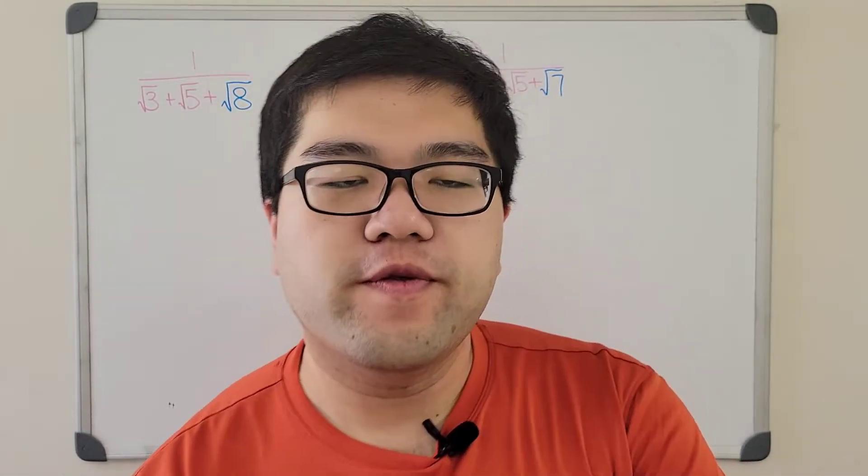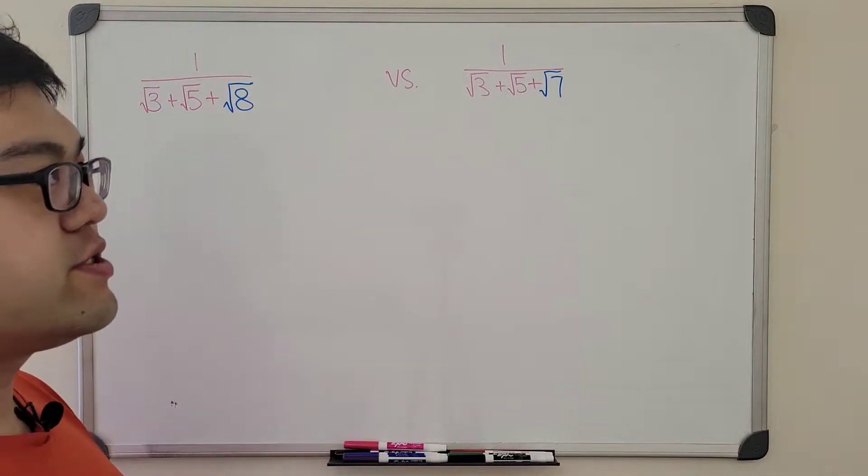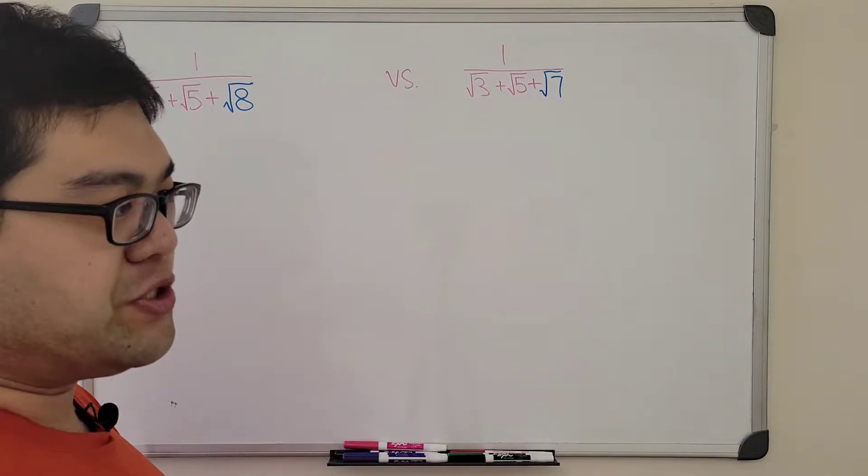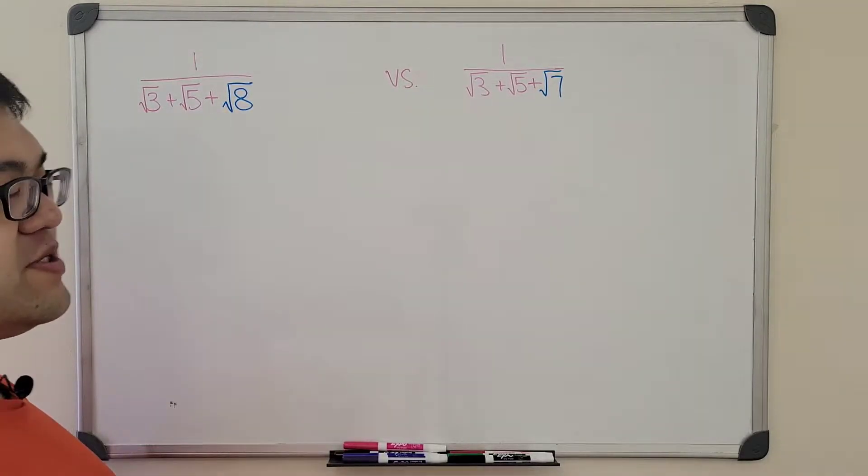What's up everyone? Today we're going to take a look at these two expressions. We're back into algebra again. So we have the two expressions here. 1 over radical 3 plus radical 5 plus radical 8 versus 1 over radical 3 plus radical 5 plus radical 7.